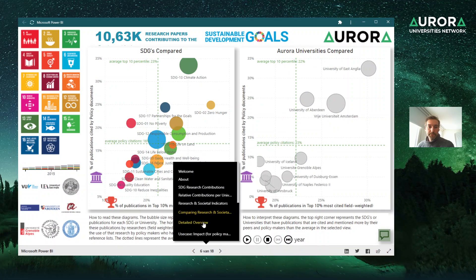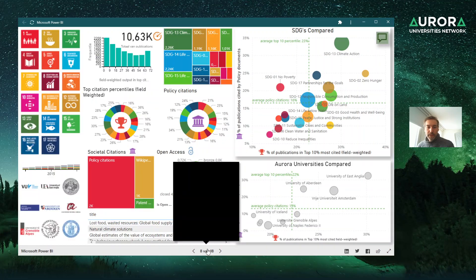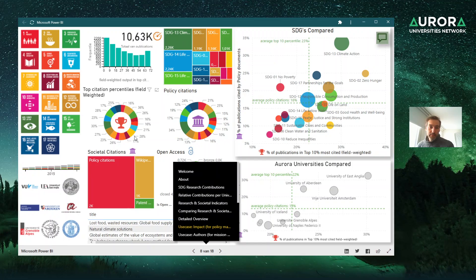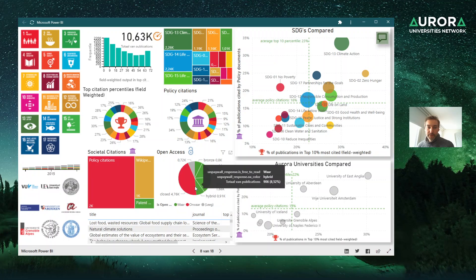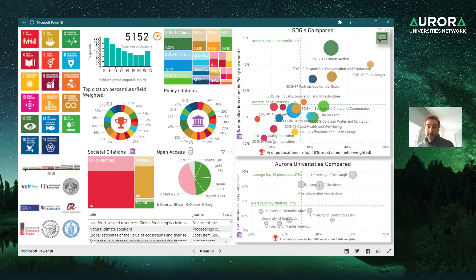Let's continue to the use case overview. This use case is particularly for policy makers, showcasing research in the top field citations and policy citations. The bubble diagrams appear here again, and you can also see the percentage of open access versus closed access. For example, you can see which SDGs are in the open access world and how that looks.